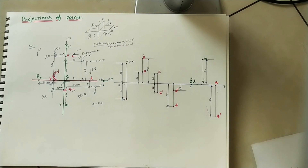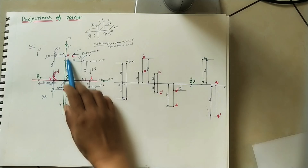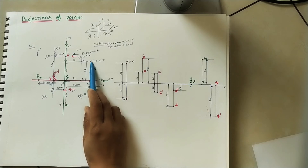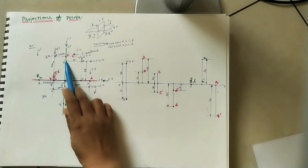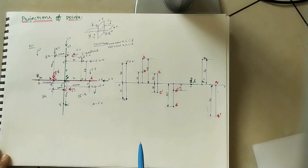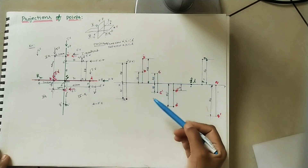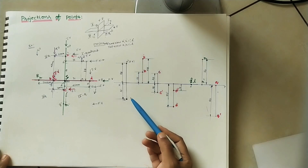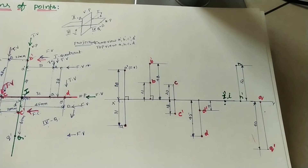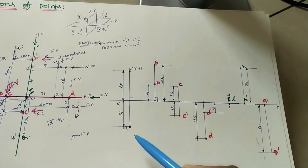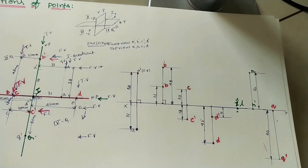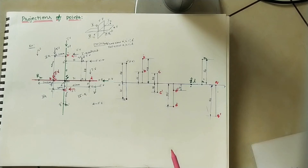That is how we mark projections of any given point. For these types of questions: first roughly draw HP and VP and mark the given point, then assume the front view and top view of that point, then in the drawing sheet draw the XY line and mark projections. Both front view and top view must be on the same projector line, which is perpendicular (90 degrees) to the XY line in all cases. If you have doubts, please comment. If you like this video, press like, subscribe, and share. Thank you for watching.